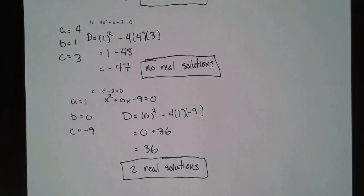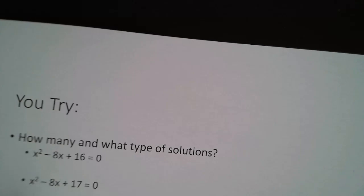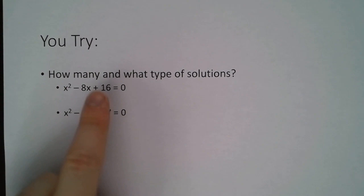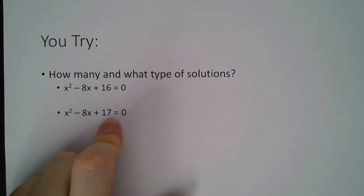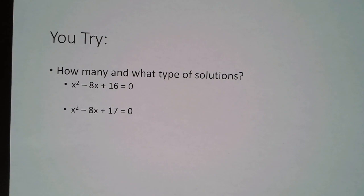Take a second, go back through those examples if you need to, but I would like to share with you the U-try problem here. So we have two very similar quadratics. The difference is the C value of 16, and then here the C value of 17. Take a minute, pause the video, try both of these examples. And I am going to pause the video as well and put up the answers for these. Pause the video now, please.